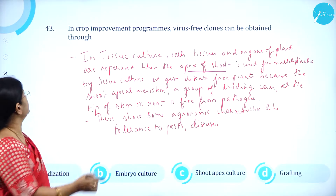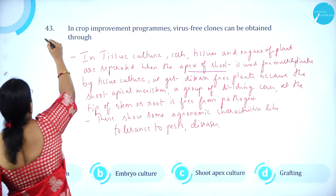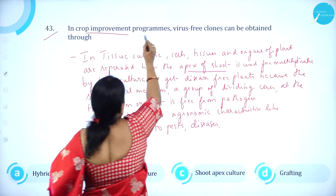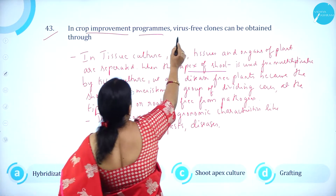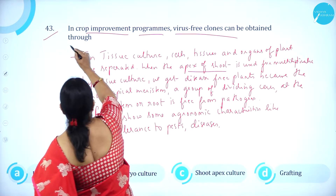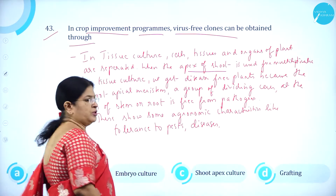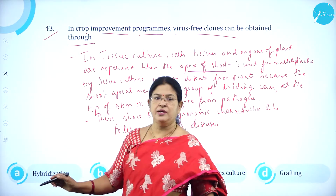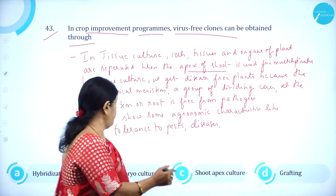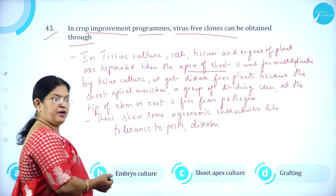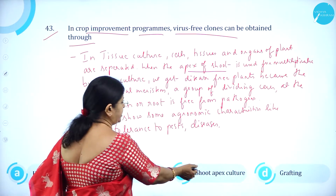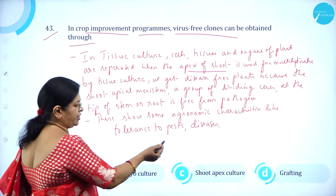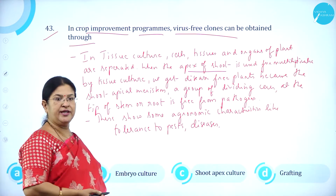Moving on to question number 43. In crop improvement programs, virus-free clones can be obtained through: Option A, hybridization; Option B, embryo culture; Option C, shoot apex culture; and Option D, grafting.